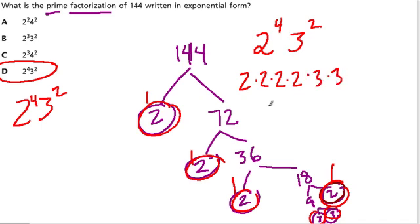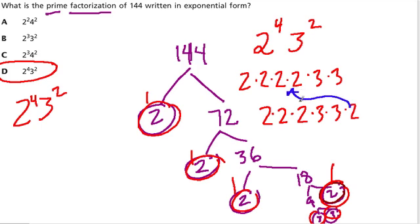Now, originally we had it in this order: 2 times 2 times 2 times 3 times 3 times 2. But multiplication is commutative — I can move these numbers around. It doesn't really matter what order I'm multiplying in; it won't change the product. All right, hope that helped.